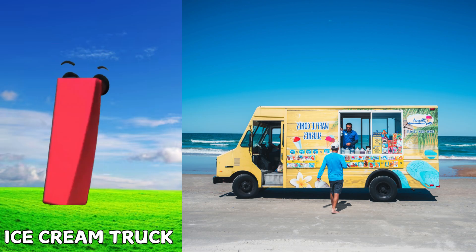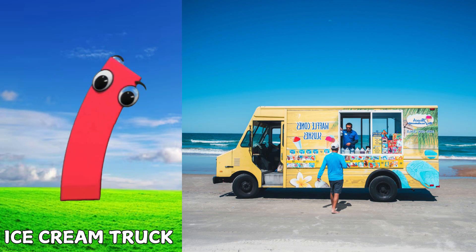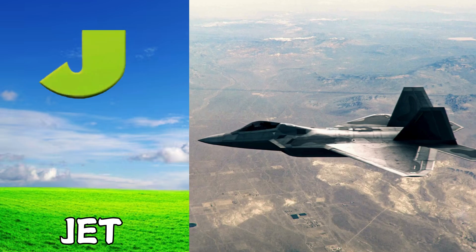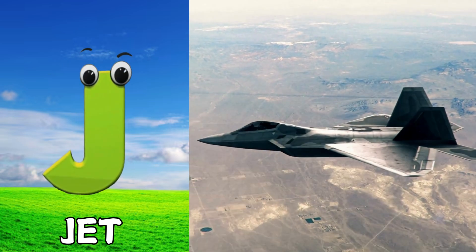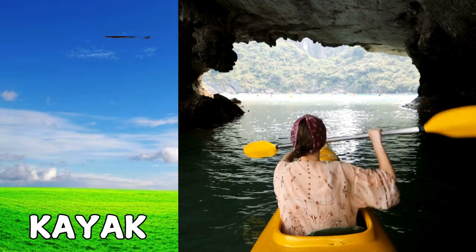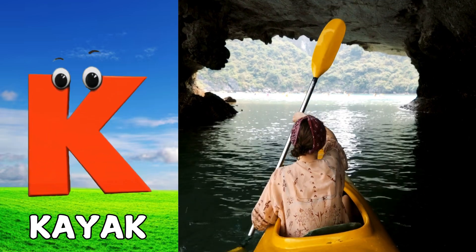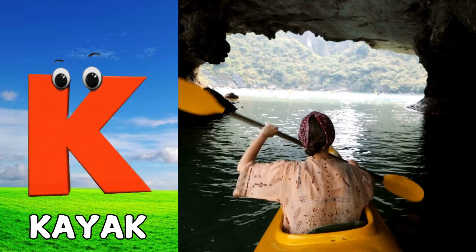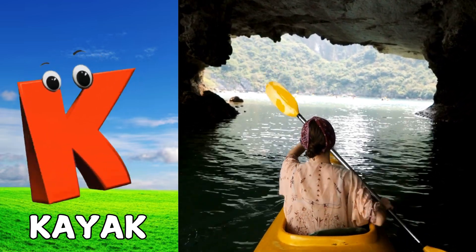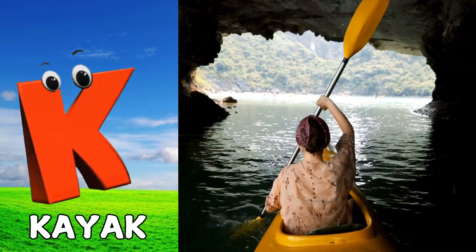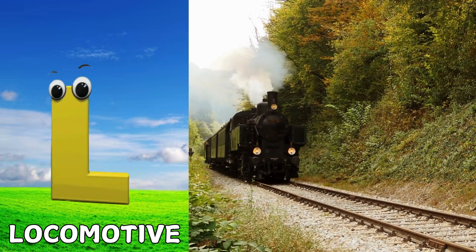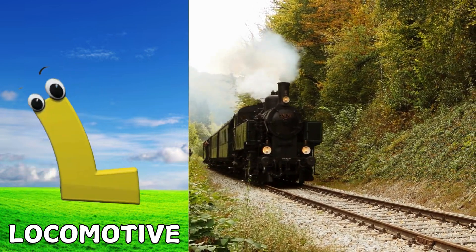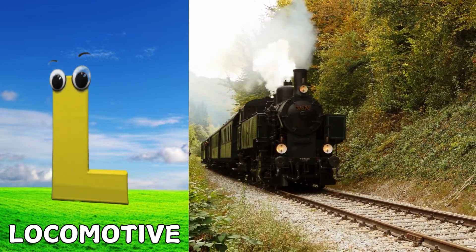I is for ice cream truck, ice cream truck. J is for jet, jet. K is for kayak, kayak. L is for locomotive, locomotive.